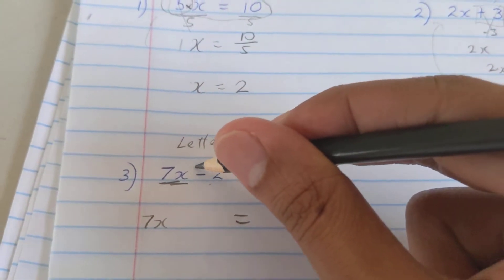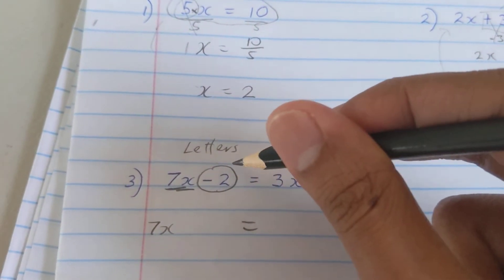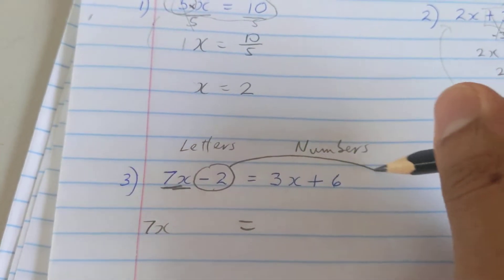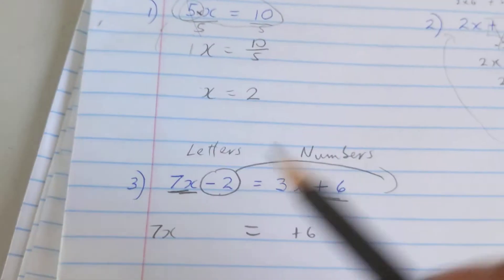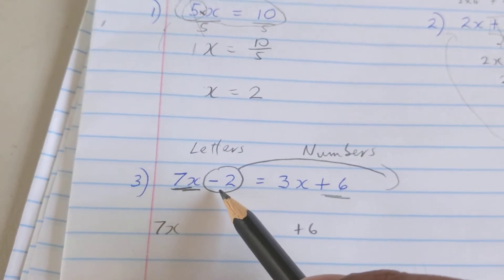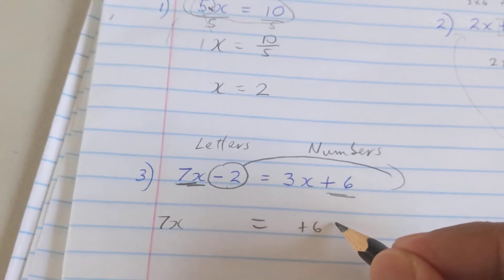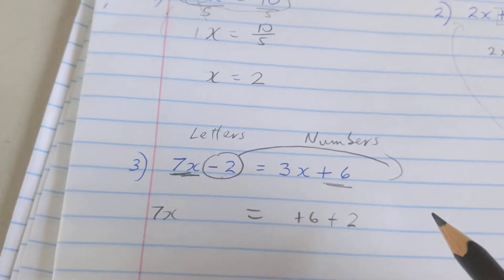He's not a letter, so whatever is not supposed to be there, he's a number, I'm gonna send him across to the side with the numbers. He's a number, so he gets to stay here. But since he's moving, once it moves, the sign's gonna change. So minus two, when it crosses, gonna be plus two.